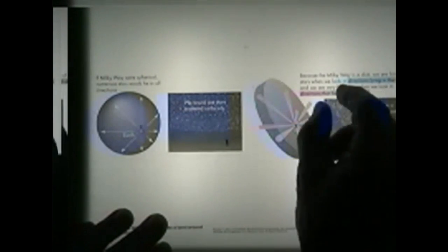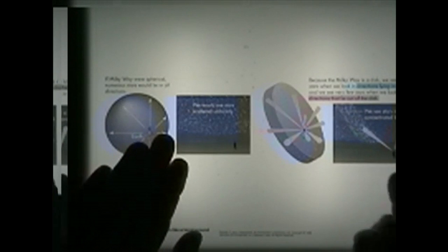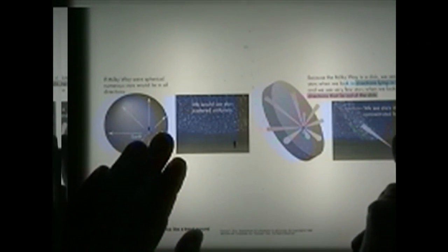Basically then, when you look in the direction of this diffuse band of light, you are looking in the plane of the Milky Way. In other directions, when you look in other directions, you look out of the plane of the Milky Way.